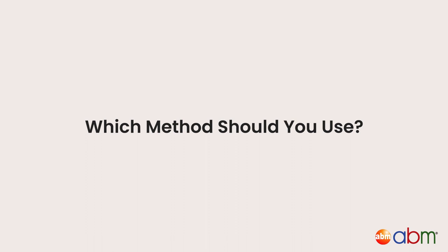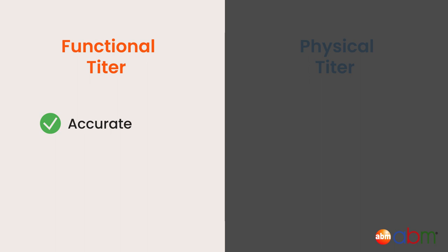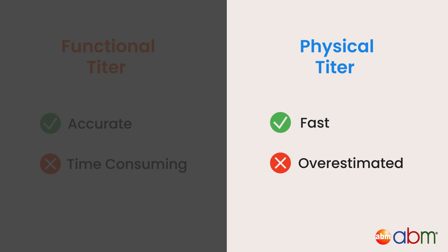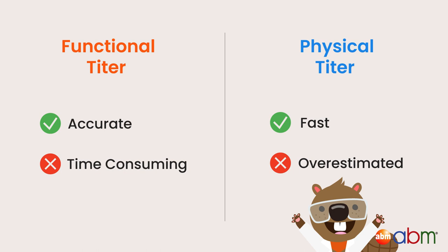Which method should you use? Now that you have an overview of the different titer methods available, which one should you use? In general, functional titers are more accurate but more time-consuming, while physical titers are quick but often overestimated due to the inclusion of defective and non-infective particles. However, for most experiments, a measure of physical titer is satisfactory.